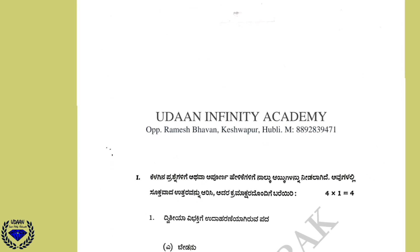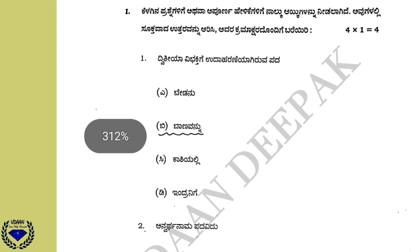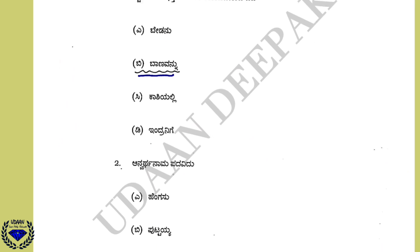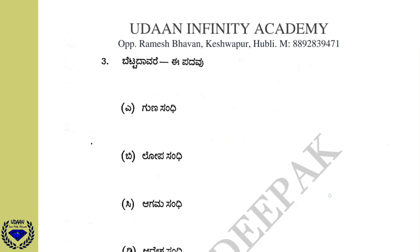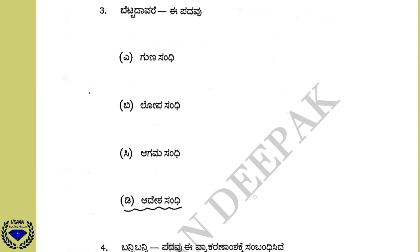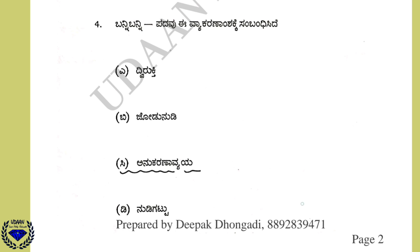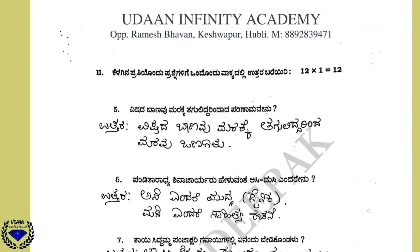We will now begin the discussion on the model answers. See the first question — you should fill in the blanks with the correct letter. Dvithiya Vibaktiya Vudharani Aagiruva Pada: the correct answer is option B, Bana Vannu. Moving to the second question: Anwarth naam padavidu — that is option C, Vaidya. Question number 3: Betta daavare e padavu — the answer is Adhesha Sandhi. Betta plus taavare = betta daavare, that is Adhesha Sandhi. Question 4: Bannu bannu padavu e vaakarana shakke sambandhi — the correct answer is Anukaranya vayya.